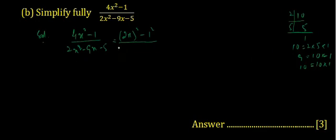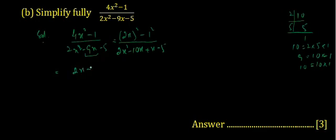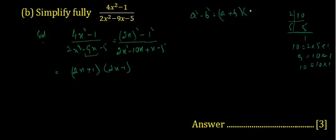The denominator can be written as 2x squared minus 10x plus x minus 5. Using the middle-term break, minus 9x is written as minus 10x plus x. For the numerator, applying the formula a squared minus b squared, it becomes 2x plus 1 multiplied by 2x minus 1.